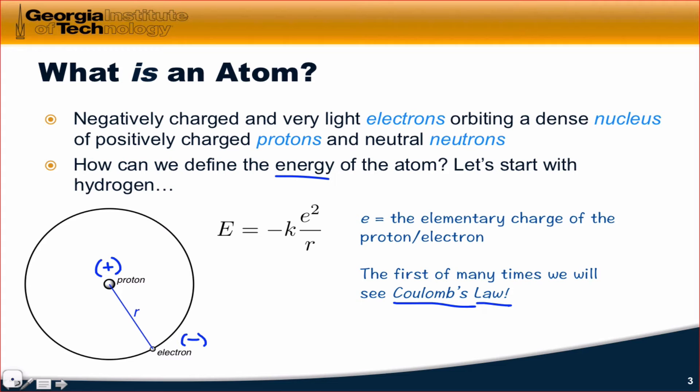Coulomb's law says the energy due to the separation between two charged particles is equal to the product of their charges divided by the distance between them, here we label that r, times some proportionality constant k.